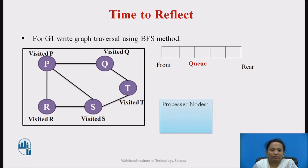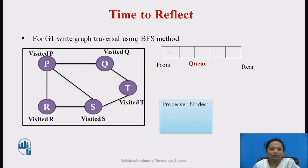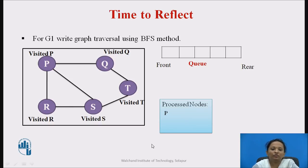This completes the BFS algorithm overview. Now it is time to reflect. By following the BFS algorithm, write the graph traversal for a graph with nodes P, Q, R, S, T. You can pause the video and write the sequence of nodes using the BFS method. Let us see the traversal for this graph. We start with node P, which is enqueued into the queue. We dequeue P, mark it as processed. The neighboring nodes of P are Q, R, and S, so these three nodes are enqueued into the queue.